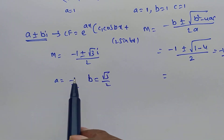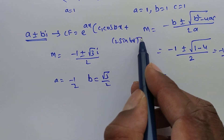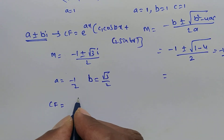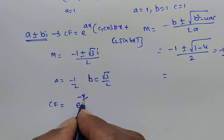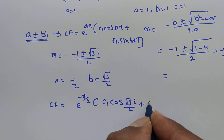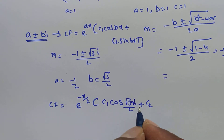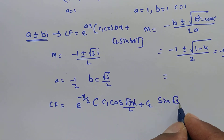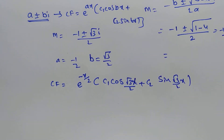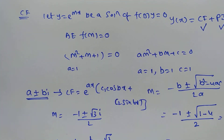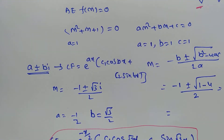Substituting a = −1/2 and b = √3/2 into the complementary function formula, the complementary function is e^(−x/2) · (c₁cos(√3x/2) + c₂sin(√3x/2)). The complementary function is now complete, so next we find the particular integral.